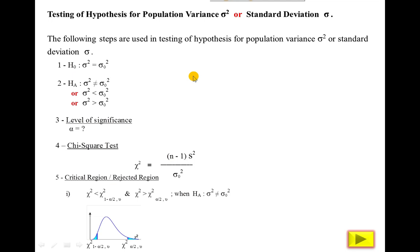Bismillahir Rahmanir Raheem. Today we will start testing of hypothesis for population variance sigma square or standard deviation sigma. Before this we have done testing of hypothesis for population mean when sigma is known and sigma is unknown. We have used two tests: T test and Z test for mean.